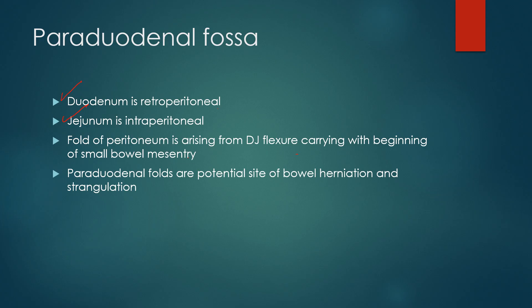Paraduodenal fossa are potential sites of bowel herniation where the bowel can enter and may become strangulated. Let me draw over here the opening where the duodenum becomes the jejunum. The duodenum is retroperitoneal, behind the peritoneum.